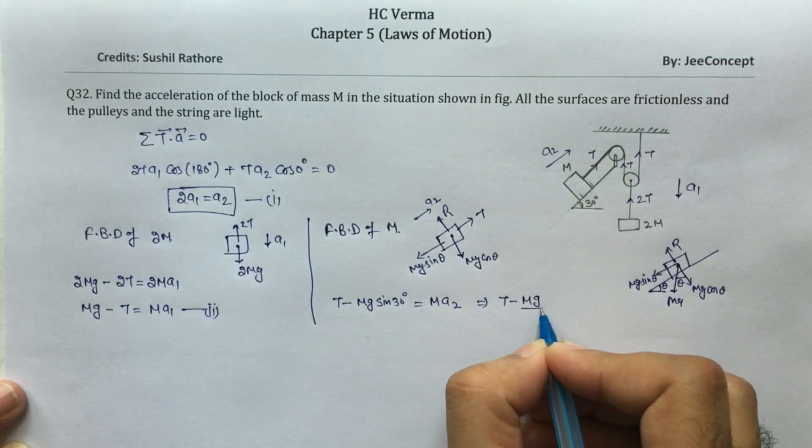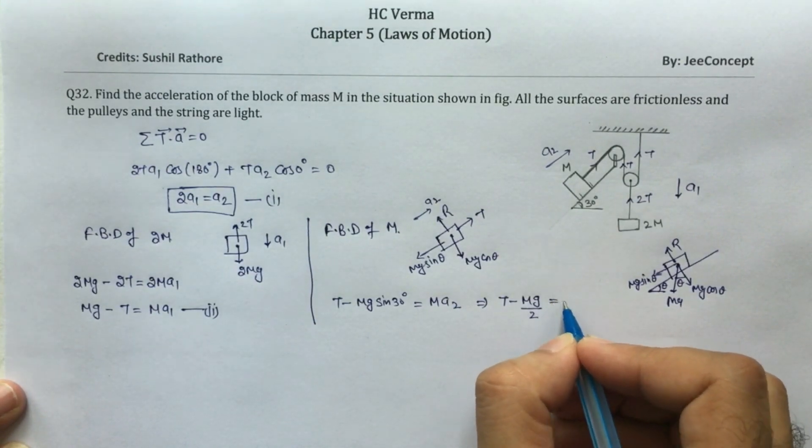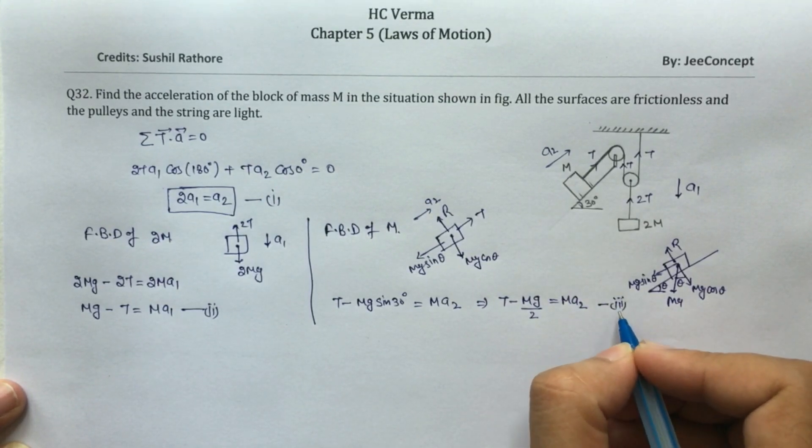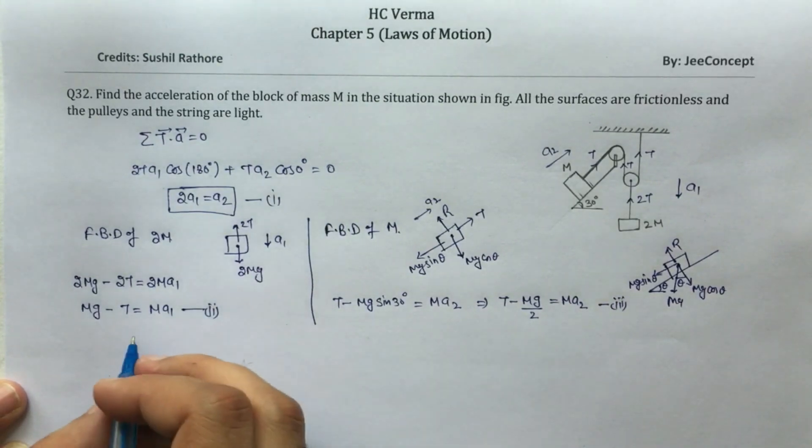So I'll get T minus mg by 2 equals m·a2. This is equation number 3.